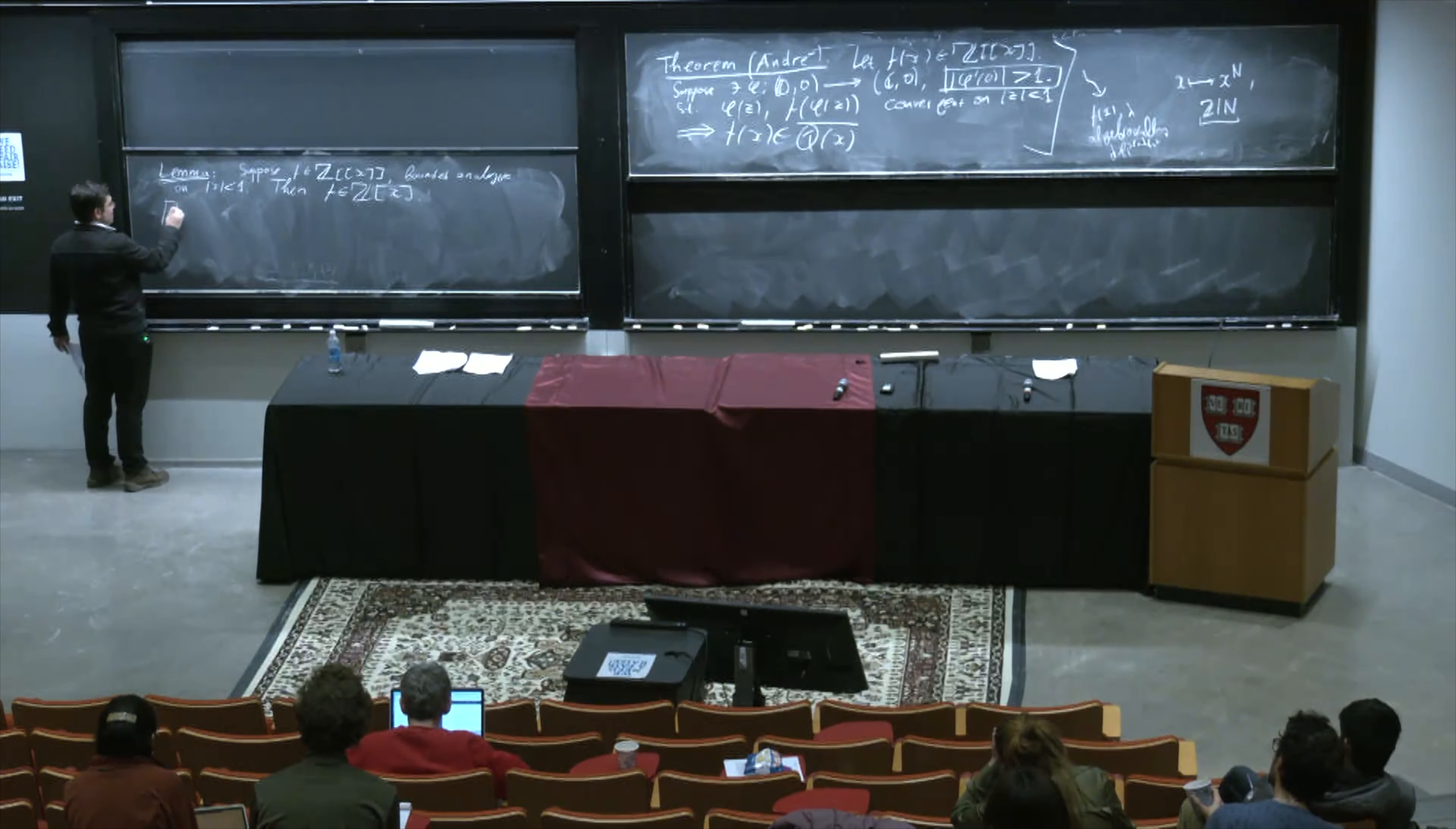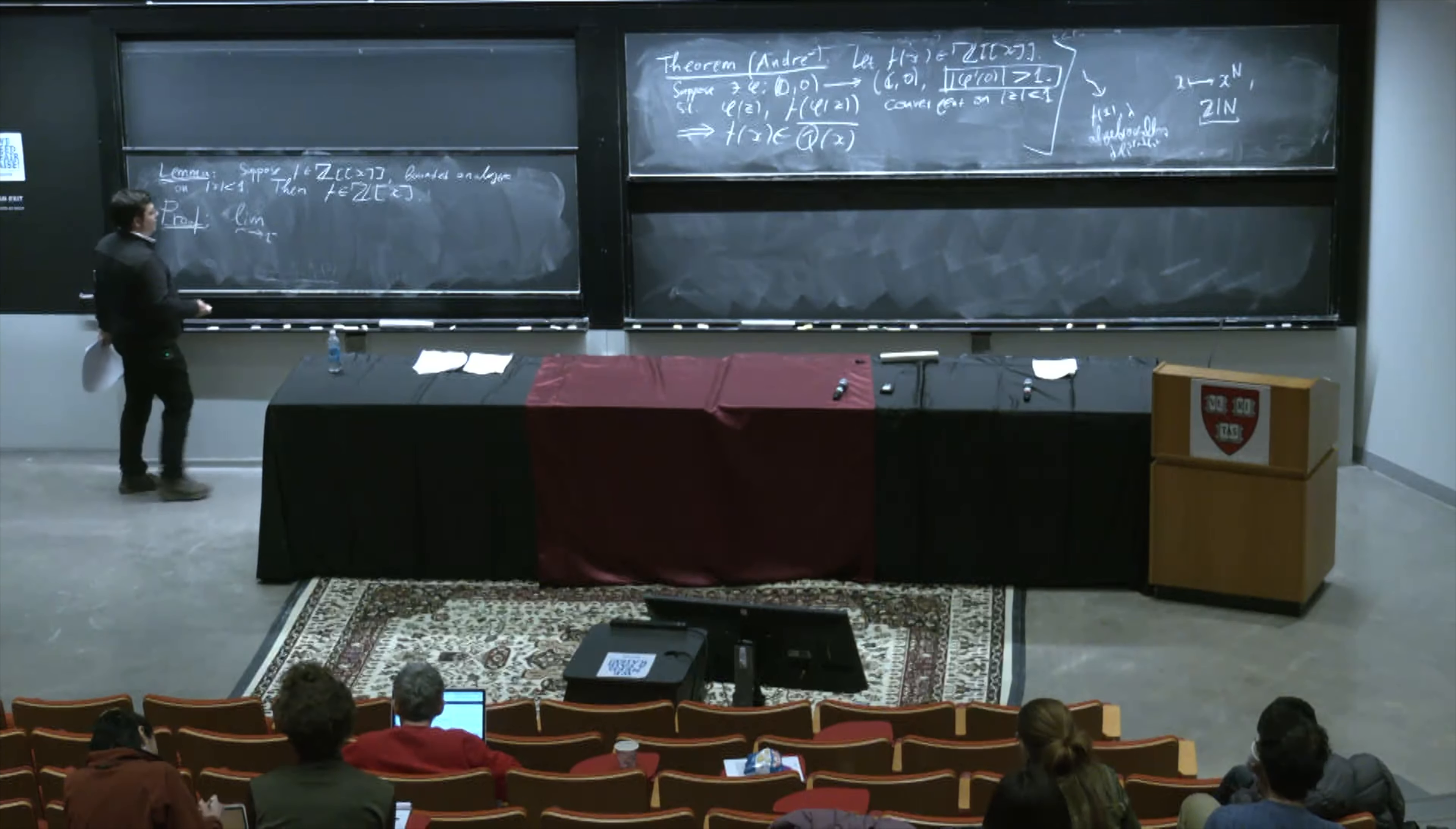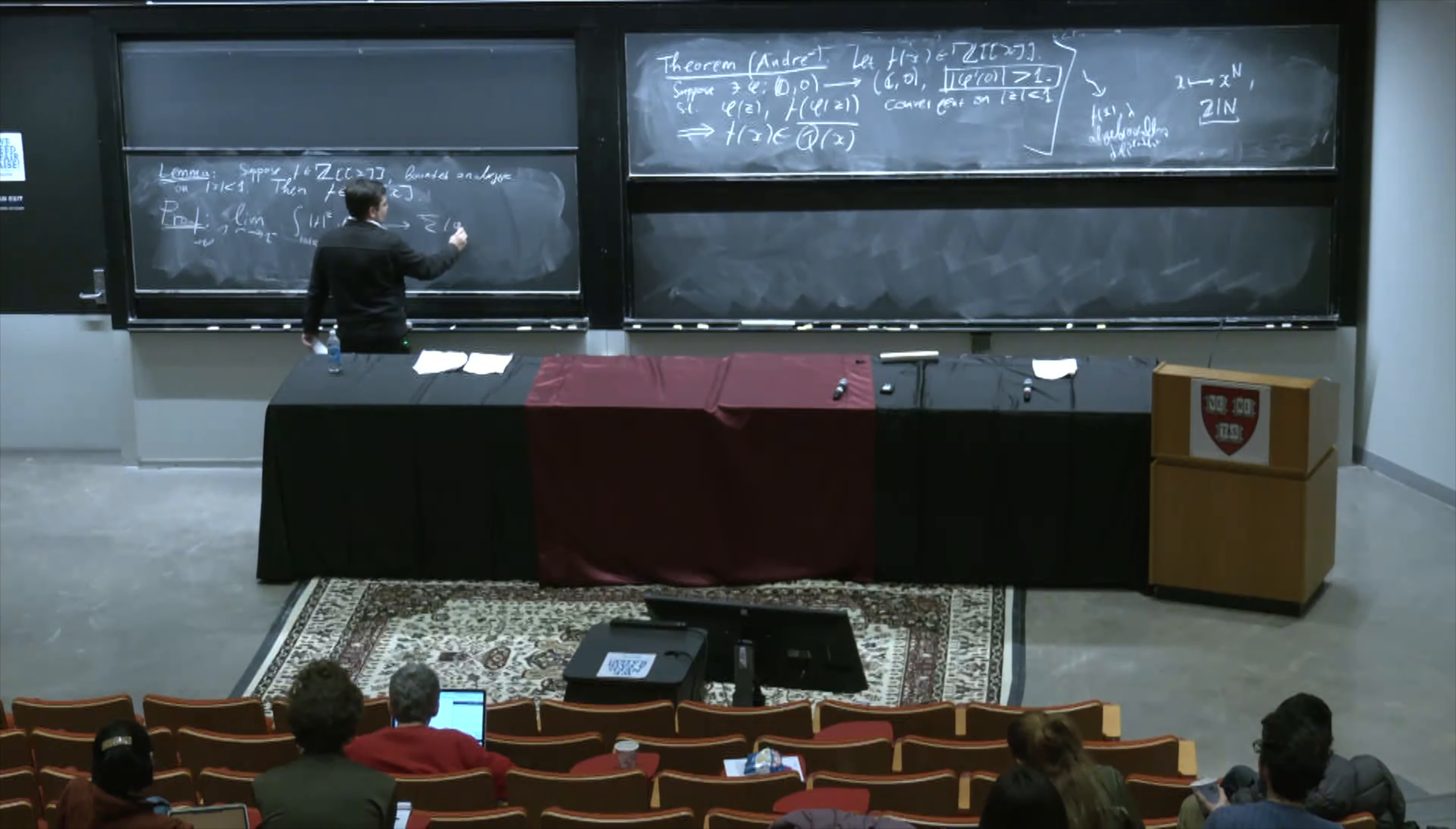And the proof of that, one line. Sometimes one applies Cauchy's integral formula against the principle that a non-zero integer is at least one in magnitude. Here, it's simply that we take limit r tends to one from below, and then you integrate the absolute value square of this function on the circle of radius r in the uniform measure. And of course, that converges to the norm square, this is bounded by assumption. This is less than infinity. And so we get that only finitely many of the coefficients are non-zero because these coefficients are integers. That's the proof.